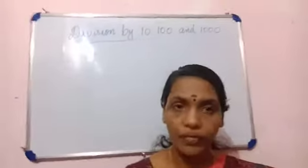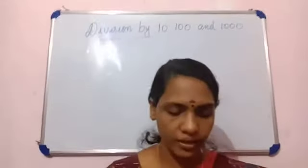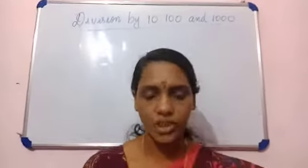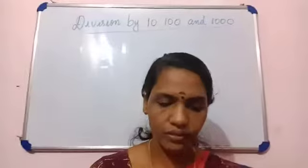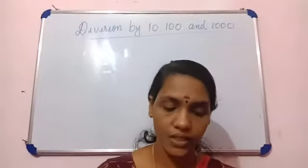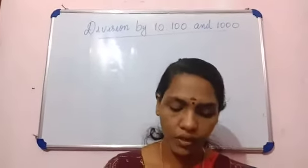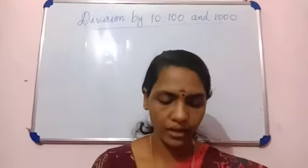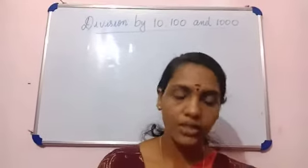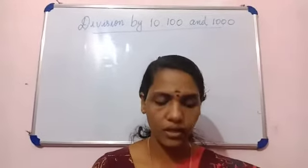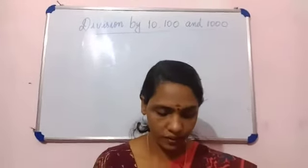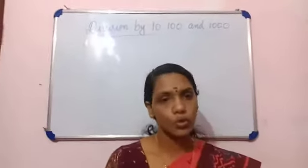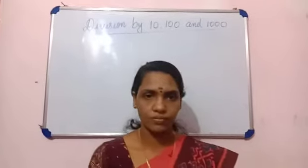If the divisor is 10, the last digit of the dividend — that is the one's place — gives the remainder, and the other digits of the dividend give the quotient.